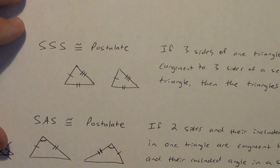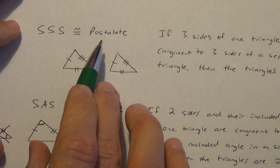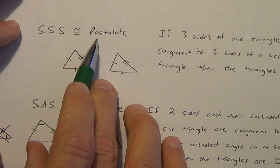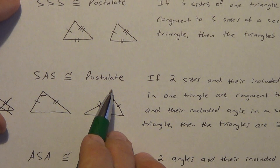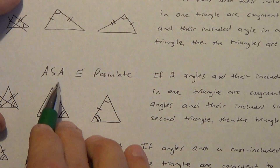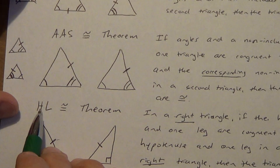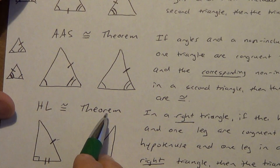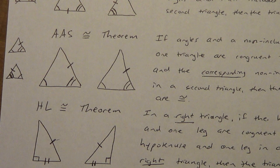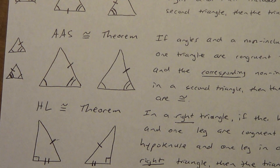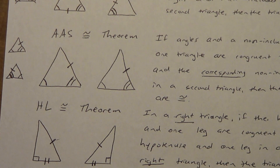So that's it for the first video. You need to know: SSS is a postulate, SAS is a postulate, ASA is a postulate, AAS is a theorem, and HL is a theorem. The next video will be pictures showing how these work, and the third video will be complete proofs.